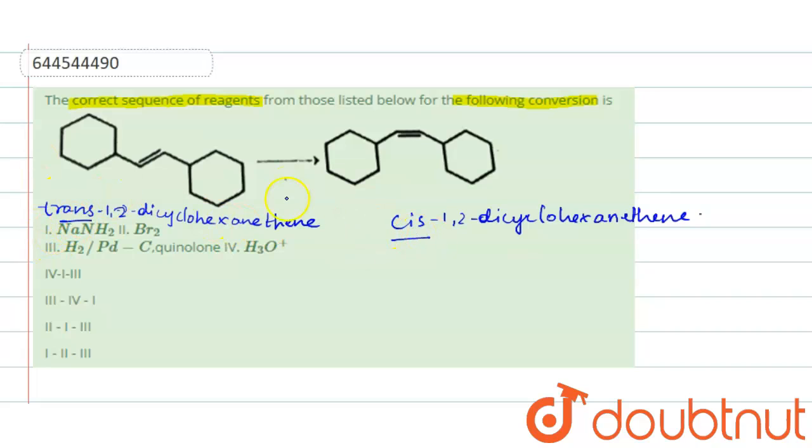We have to convert this trans form into cis form using these reagents. To convert the trans form into cis form, what we will do? This is the trans form, right? First we will break this double bond by